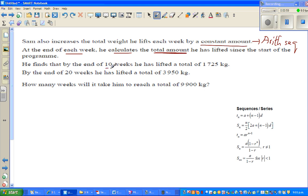He finds by the end of 10 weeks he has lifted 1725 kg, and by the end of 20 weeks he has lifted 3950 kg. The question is how many weeks will it take for him to reach 9900 kg? This is the formula of S_n or the total in an arithmetic sequence: S_n equals n over 2 times 2a plus n minus 1 times d.